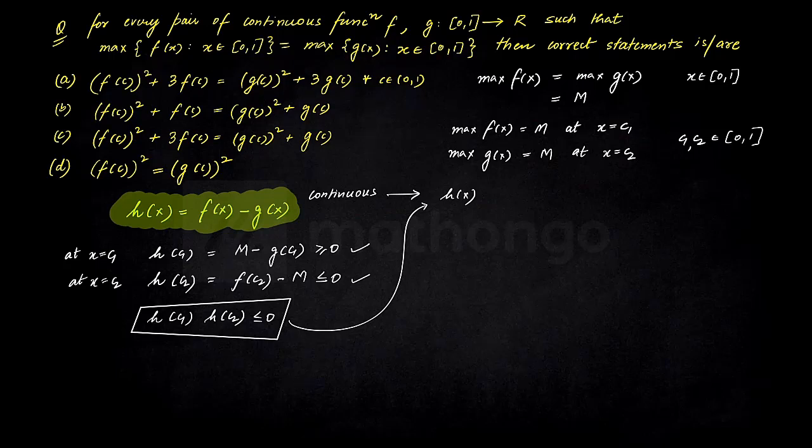That implies h(x) will be equal to 0 for some, for some c lying between c1 and c2. En dono ke beech mein. That means if I have to go forward and say that h at some point of c will be equal to 0. That means